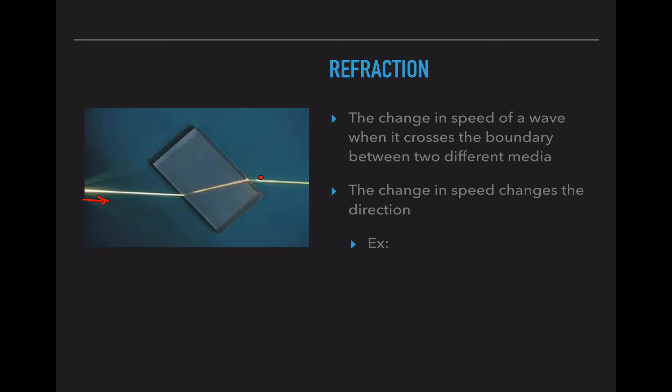When it hits the outside boundary it continues going the same speed as originally. Because in air, the speed on this side has to be the same as the speed on this side. So refraction is the change in speed of a wave when it crosses between two different media. Media is just the plural for medium.